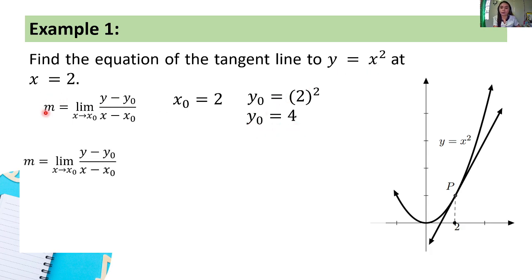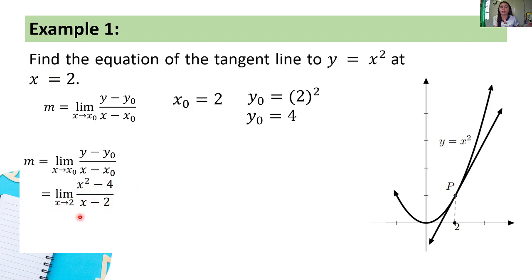Next, let's compute the slope of the tangent line. Again, it equals the limit of (y minus y₀) all over (x minus x₀) as x approaches x₀. This equals the limit of (x² minus 4) all over (x minus 2) as x approaches 2. Since y = x² from the given and y₀ = 4, substituting gives x² minus 4 in the numerator.